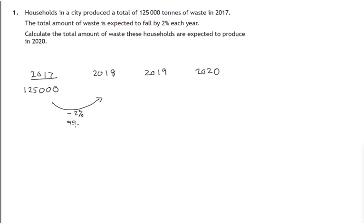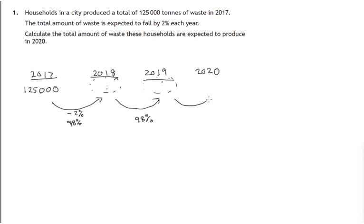So we're trying to find 98 percent of this to work out next year's amount of rubbish, and then a similar process will go on again. We have to find 98 percent of this to estimate the following year, 2019's rubbish, and also again to find an estimate for 2020. We take 2019 as the hundred percent, it falls by two percent, so we work out 98 percent of this to find 2020's estimate.